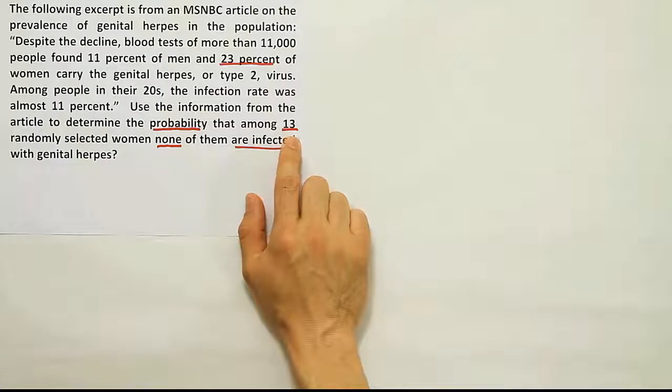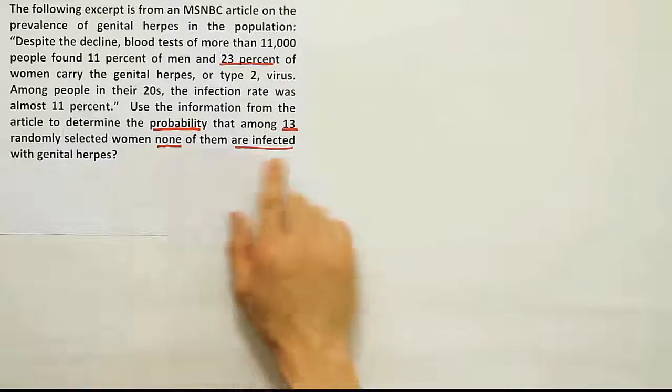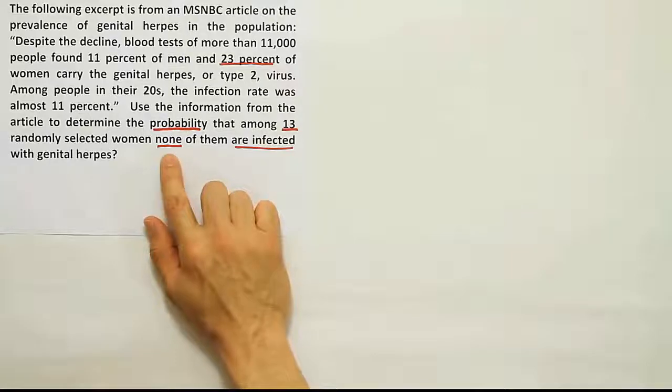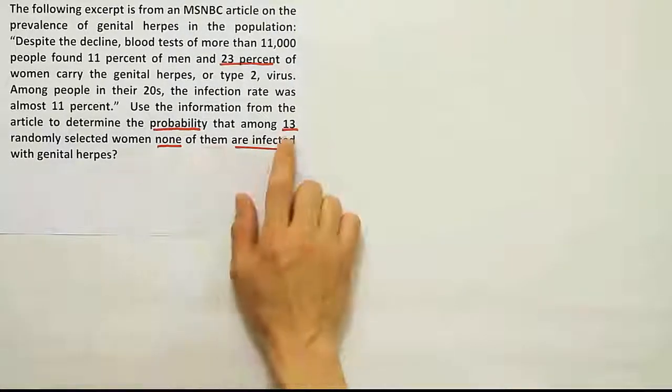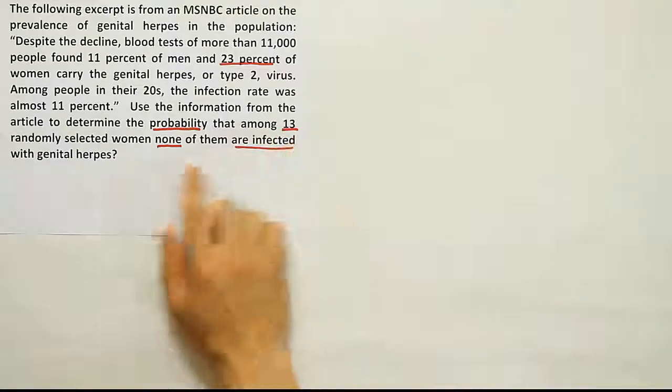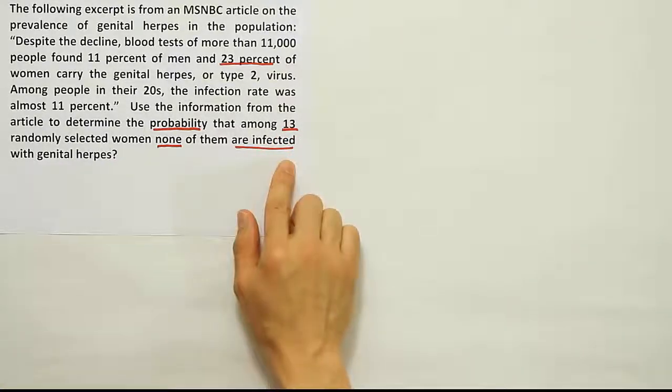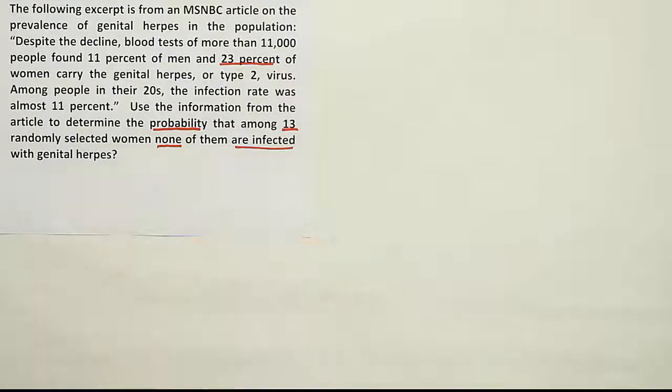That among 13 randomly selected women—the fact that it's more than one tells me it's multiplication rule possibly—and it says that none of them are infected with genital herpes. So this is a simple case that all of them have the same condition, that they're not infected with the disease. So if you have more than one thing selected, in this case all of them are doing the same thing, they're all not infected, then we're going to assume it's multiplication rule of probability.